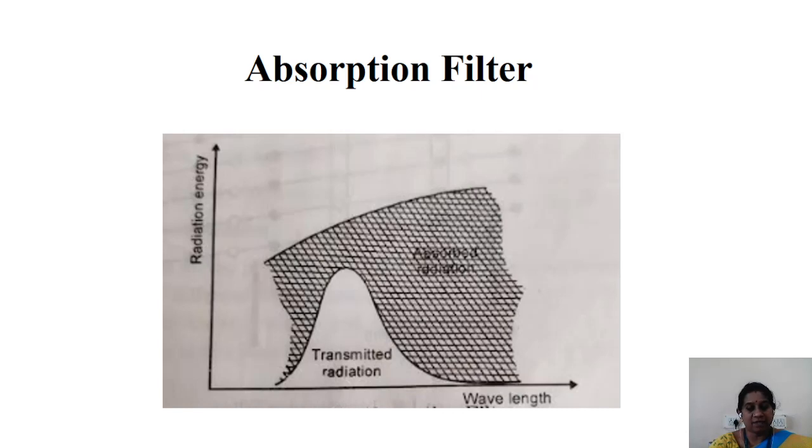And this diagram represents the absorption type of filter. You could see here this x-axis represents the wavelength and the y-axis represents the radiation energy.